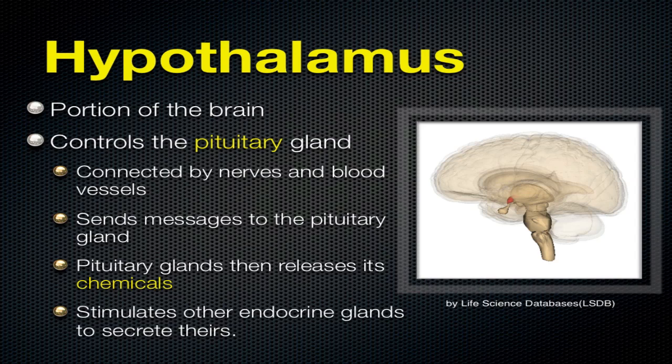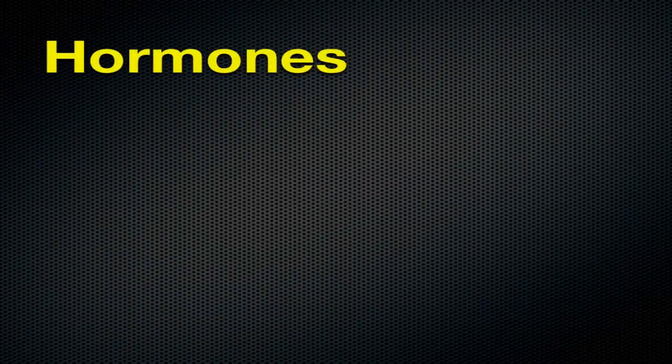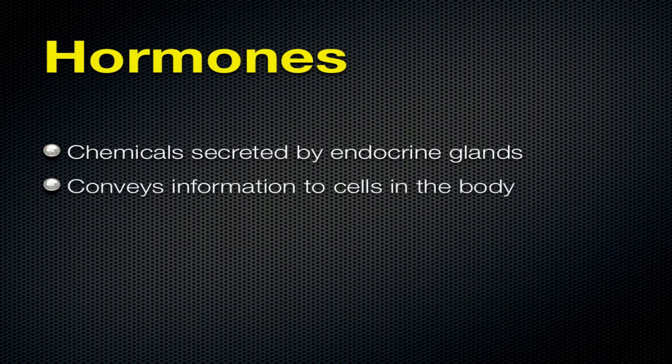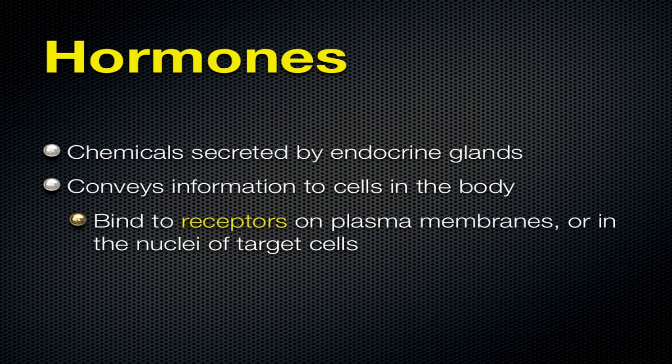When the pituitary gland releases its chemicals, that stimulates other endocrine glands to secrete theirs. So we have a number of glands in the body - the hypothalamus controls the pituitary gland, the pituitary gland sends out its chemicals, and then it controls the other endocrine glands. Hormones are the chemicals secreted by those endocrine glands. Those hormones have a number of different effects because they convey information to the cells in the body and tell them to do different things. They bind to receptors on plasma membranes or in the nuclei of the target cells.